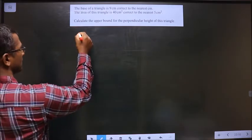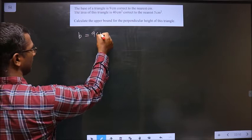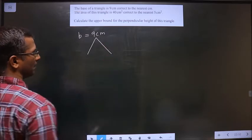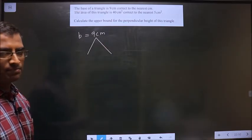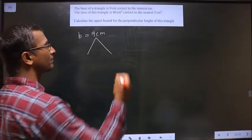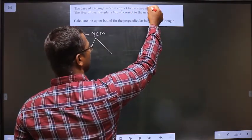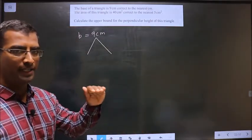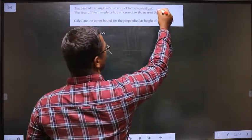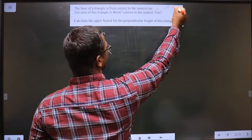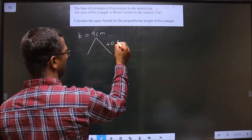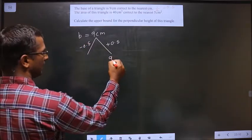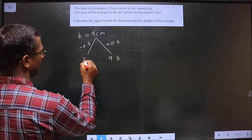Given number is base equal to 9 cm. What should I subtract and add to get lower and upper bound? How do I decide it? We decide in this way. It is corrected to the nearest centimeter, that means 1. It is nearest to whatever, we should do half of that. So when I do half, I get 0.5. So this I should add and subtract. So I get 9.5 and 8.5.